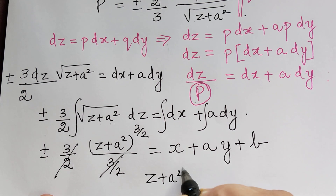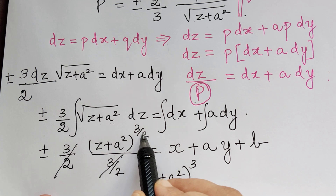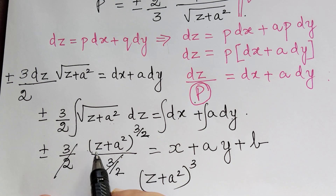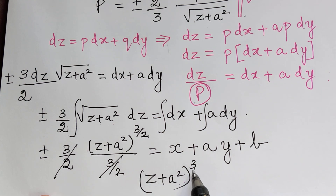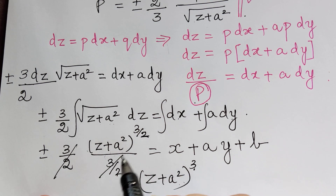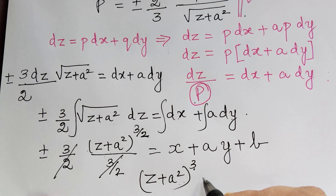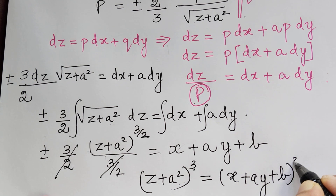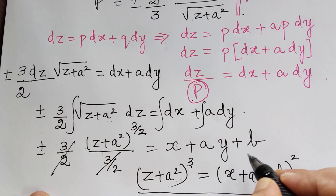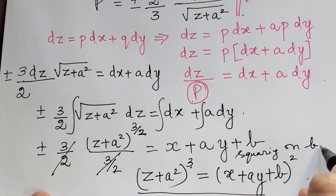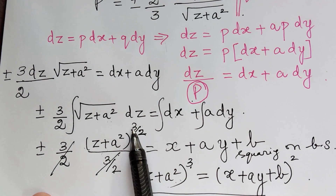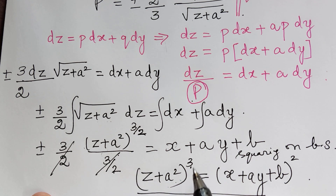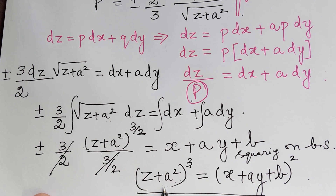Squaring both sides: the plus or minus becomes positive. On the left, (z plus a squared) to the power 3/2, when squared, gives (z plus a squared) cubed — because the square root (the 1/2 power) is eliminated by squaring, leaving the power of 3. On the right, squaring gives (x plus ay plus b) squared. So the required solution is: (z plus a squared) cubed equals (x plus ay plus b) squared.